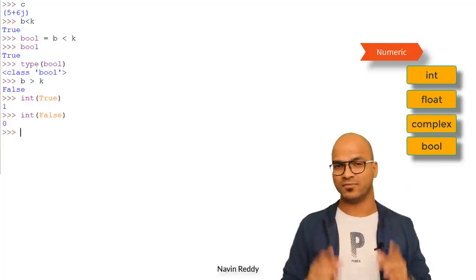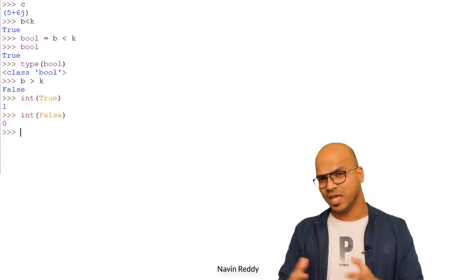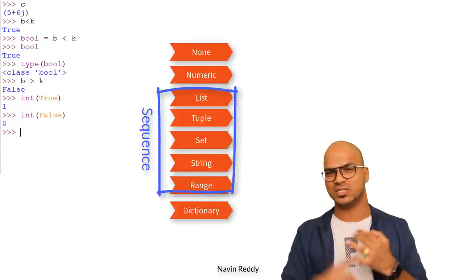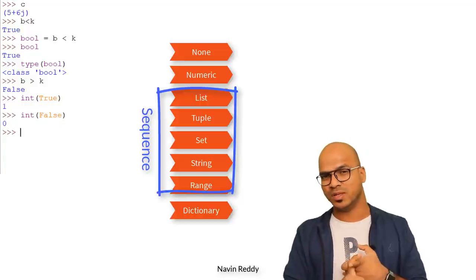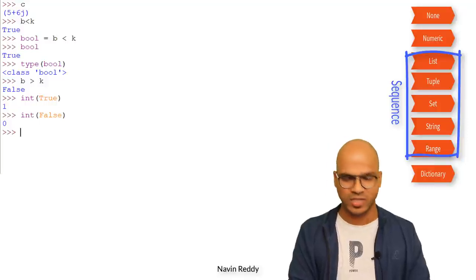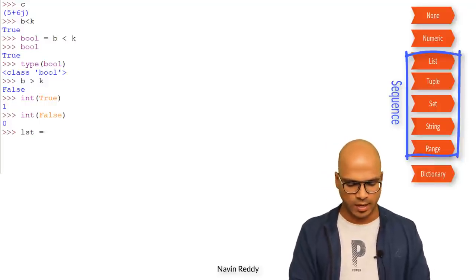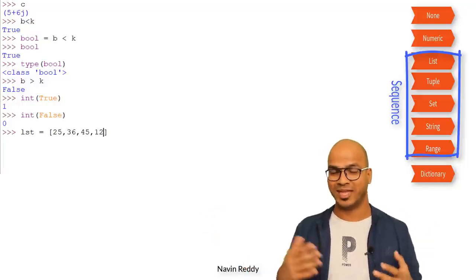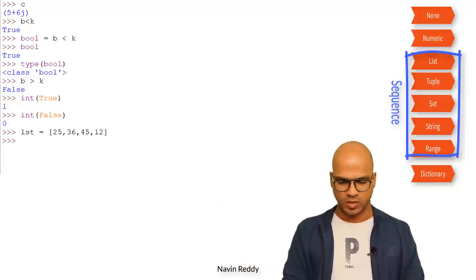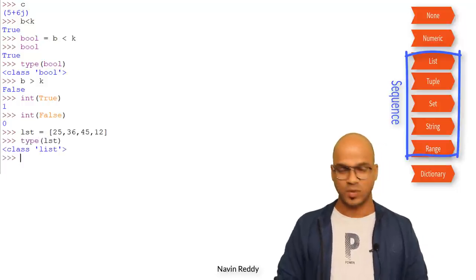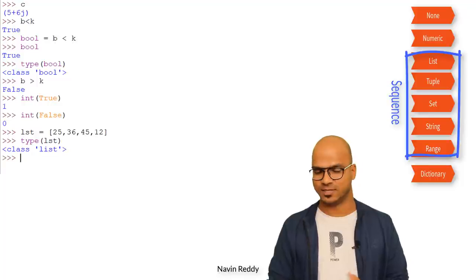We've talked about None and numeric. The next types — list, range, set, tuple — come under sequence. Let's look at list, which we've worked with before. I define a list as lst = [25, 36, 45, 12]. You can mix any format or even strings. If I check the type using type(lst), you can see it says type list.